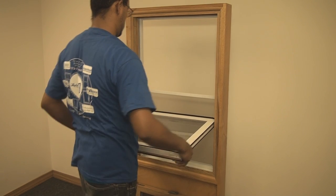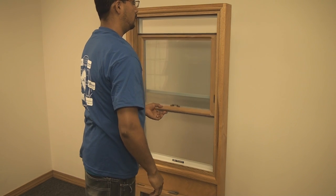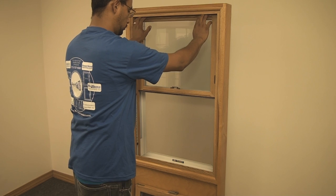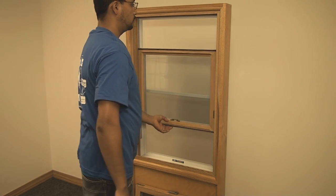If you see the sash slowly sliding upward, that means the balancer is too tight. If you see the sash sliding downwards, that means you need to tighten the balancer.